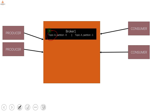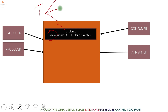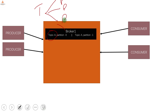A topic is a logical grouping of the messages that are sent to Kafka. A producer needs to specify the broker's IP address and port, and the second thing is the topic name. Inside the topic itself, messages are organized into different partitions. When you send a single message to a topic, first a partition is decided, and then the message is appended there.